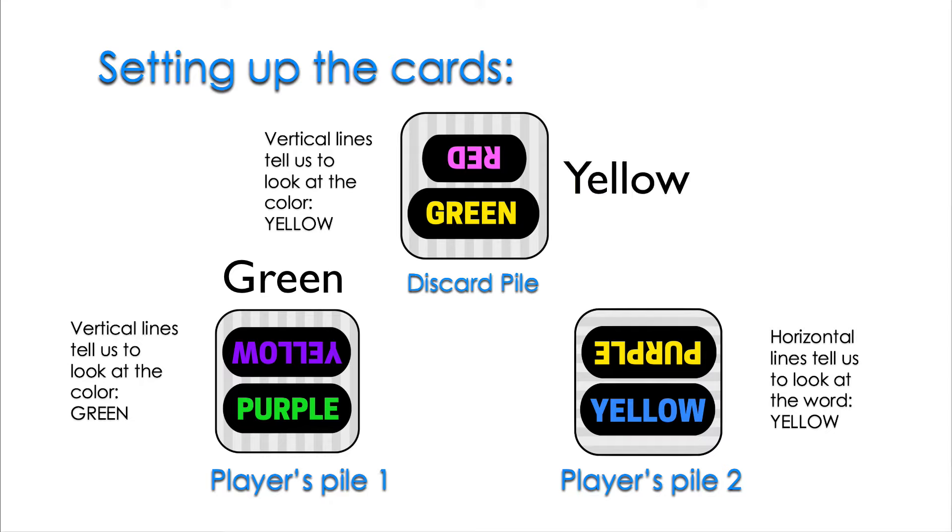However, player two does have a match. Their horizontal lines tells us to read what the word says, yellow. As soon as there is a match, the player must shout out focus.